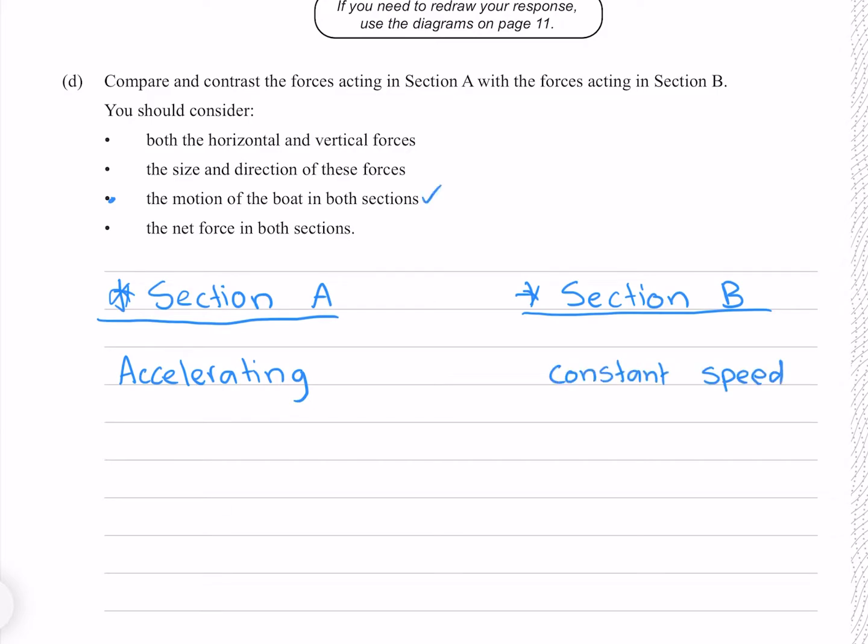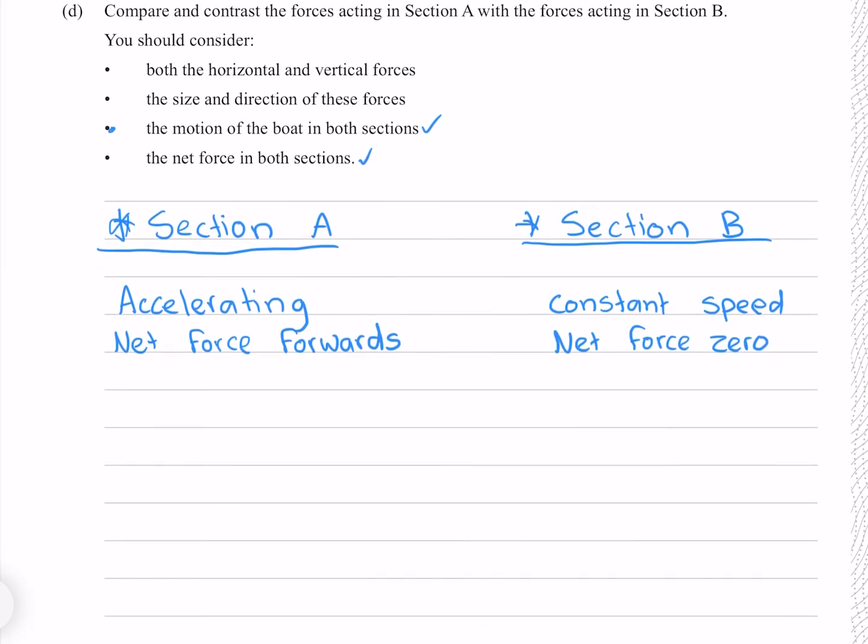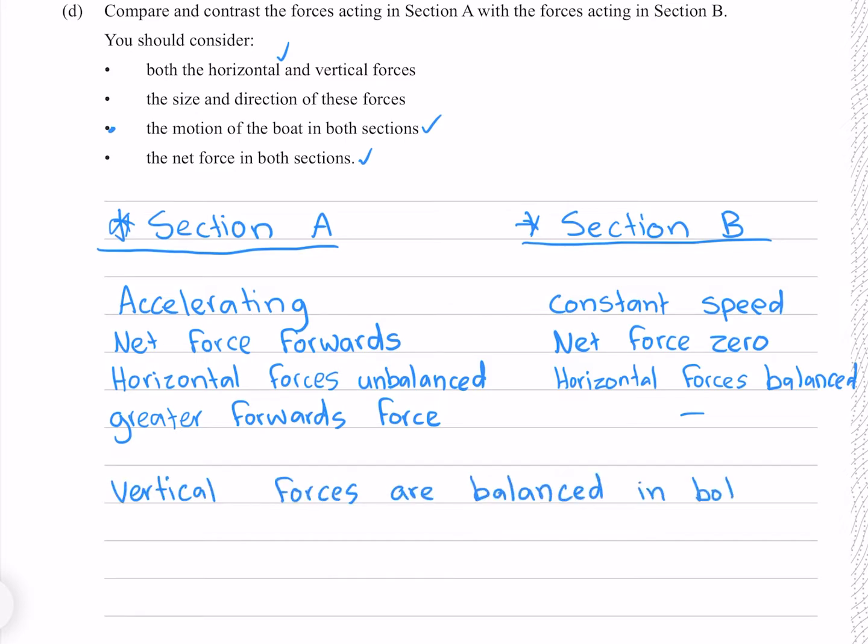As for the net force, in section A the net force is forwards, and in section B the net force is zero. In section A our horizontal forces are unbalanced with a greater forwards force, whereas in section B our horizontal forces are balanced. The vertical forces are balanced in both cases as there is no vertical acceleration.